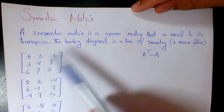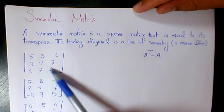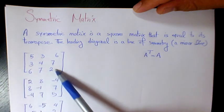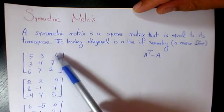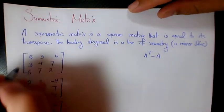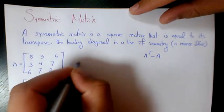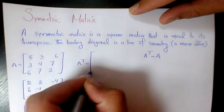As you see here, we have the diagonal of the matrix, and the transpose of these two are the same. For example, if I write the transpose of the first matrix...